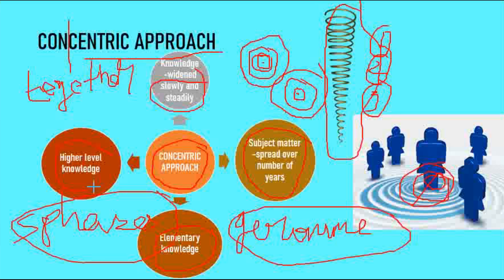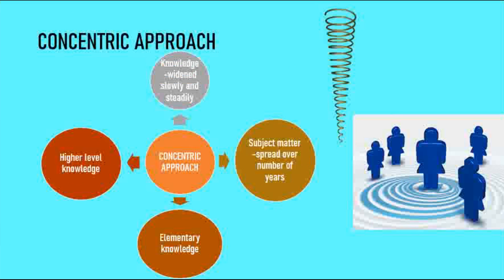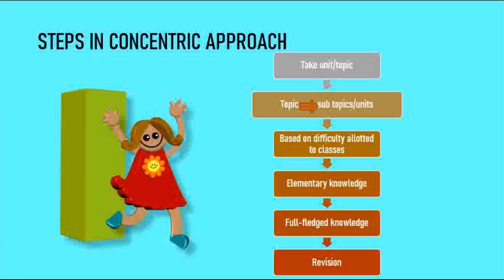The steps in the concentric approach: First, the unit or topic is selected. The subject matter is divided and broken into a number of subtopics or units. It is then allotted to different classes based on the difficulty level.